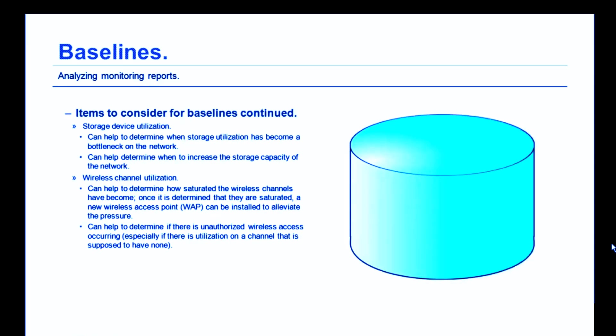You might want to consider baselining your storage device utilization. This can help to determine when storage utilization has become a bottleneck on the network — where your storage device is actually causing the network to slow down because there's too much data being pushed into it. This means that baselining your storage utilization can help determine when to increase the storage capacity of that network.